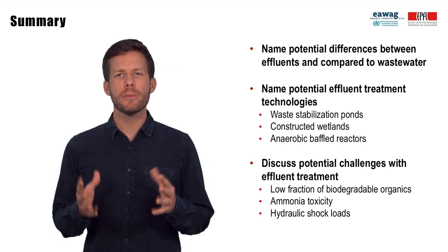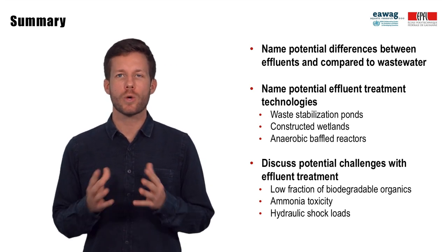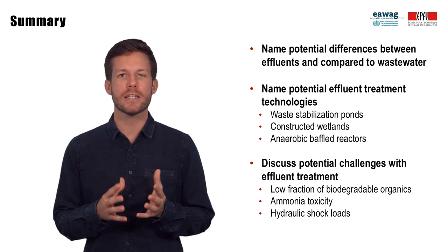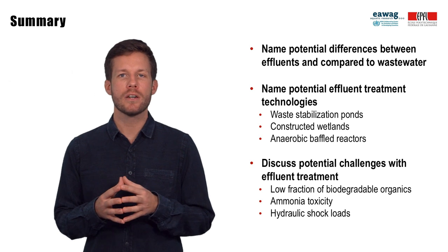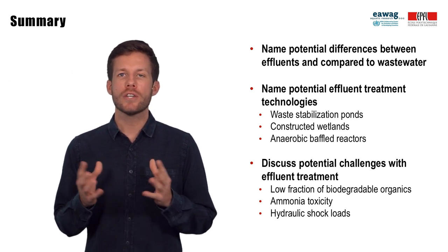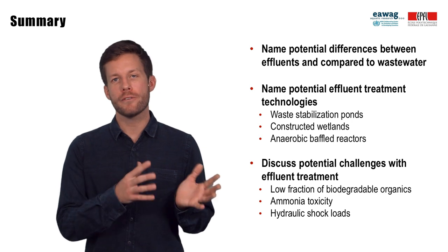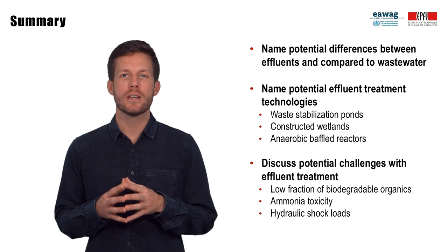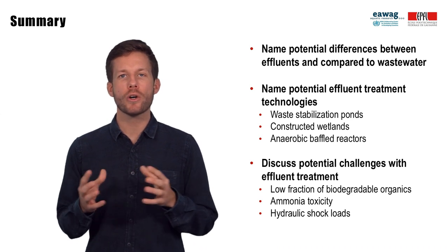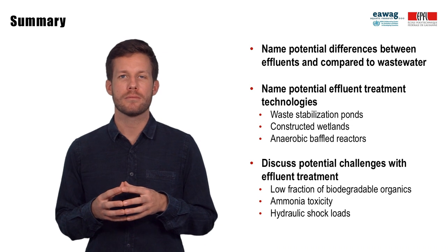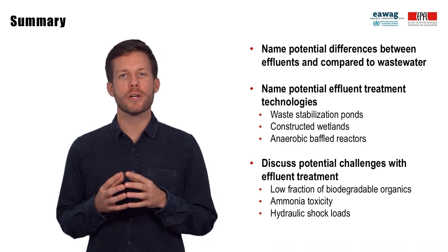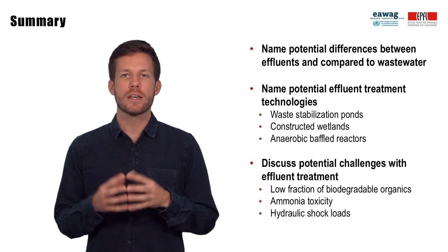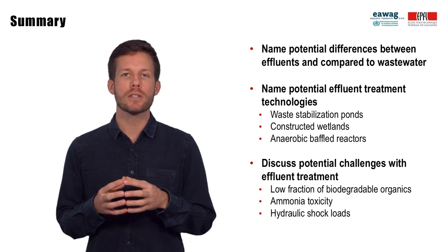In this module, we discussed that treatment plants can produce several liquids that require further treatment. In general, these liquids have high concentrations of organics, nutrients, and salinity, which are often higher than wastewater. As shown for two treatment plants — one in the Philippines and another in India — waste stabilization ponds, constructed wetlands, and anaerobic baffled reactors are among the technologies used for effluent treatment. A low fraction of biodegradable organics, high ammonia concentrations, or hydraulic shock loads can be challenges with effluent treatment and should be considered.